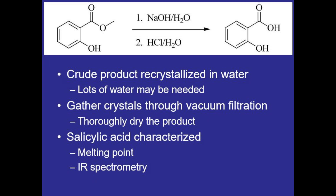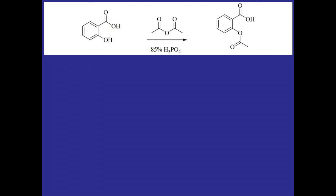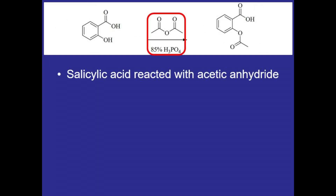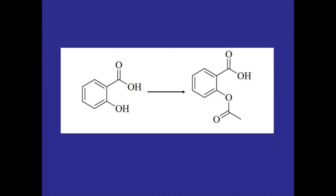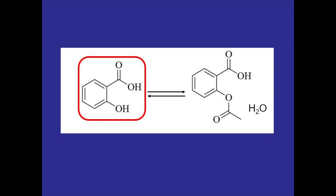Once we know we have salicylic acid, we'll react it with acetic anhydride using phosphoric acid as the catalyst. The salicylic acid must be dry from the previous steps because water can actually hydrolyze the ester on the aspirin product. In the second reaction, if water is present with additional heat or interacts with the aspirin for a prolonged time, it can react with the ester and hydrolyze it back into the salicylic acid reagent.